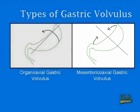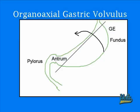From the diagram here, we can see that the stomach is labeled in green, the axis is the black line, and the arrows show where the stomach will twist. Since organoaxial gastric volvulus was mentioned first in the previous slide, we'll start in more detail on organoaxial gastric volvulus first.